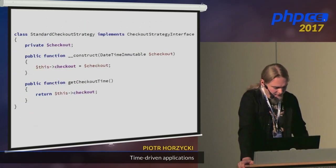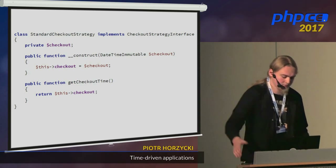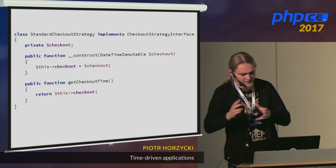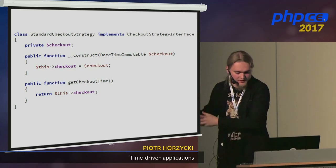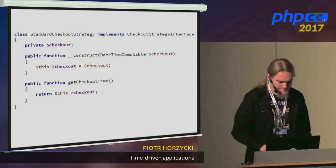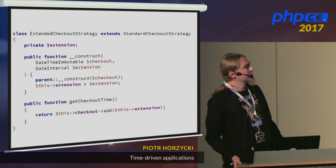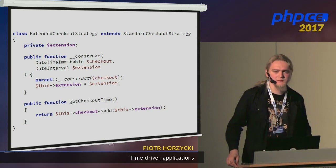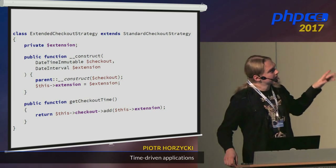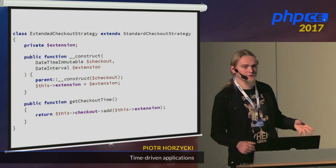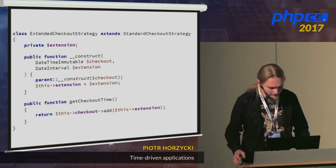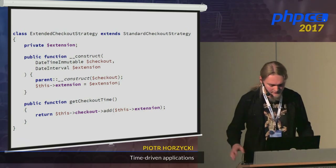The standard strategy for ordinary users would be: the hotel wants you to leave at 12 p.m., so you have to. But if you are a premium VIP user, you might have some different options. This class receives some checkout time defined by the hotel, plus a second argument for how many extra hours to give that user. This can be exchanged easily for different users.